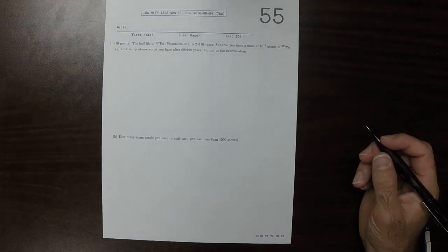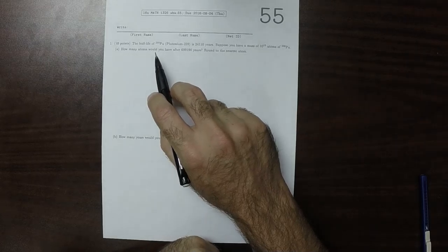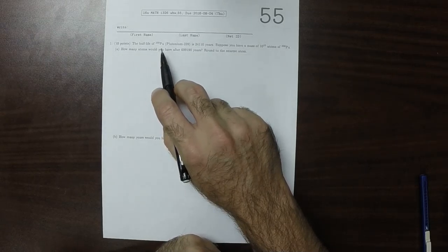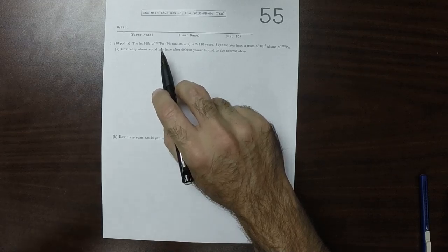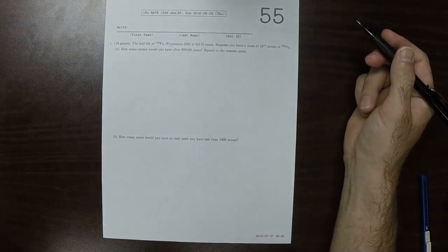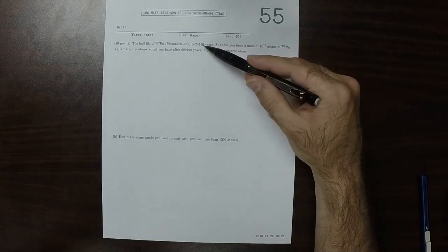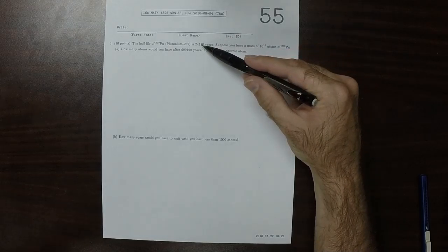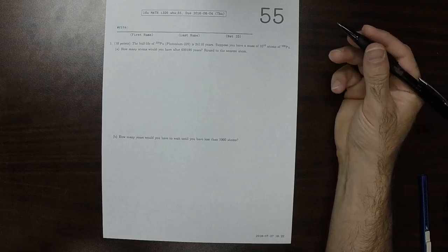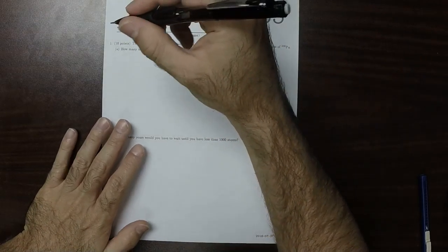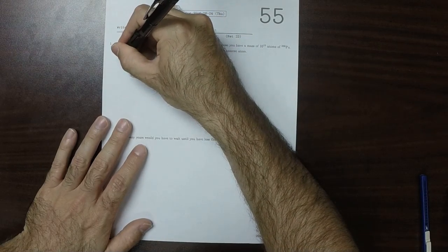This is the solution to written homework 55. The question is about the half-life of plutonium-239 atoms. We're told that the half-life is 24,110 years and the question is how many atoms would you have after essentially 700,000 years?